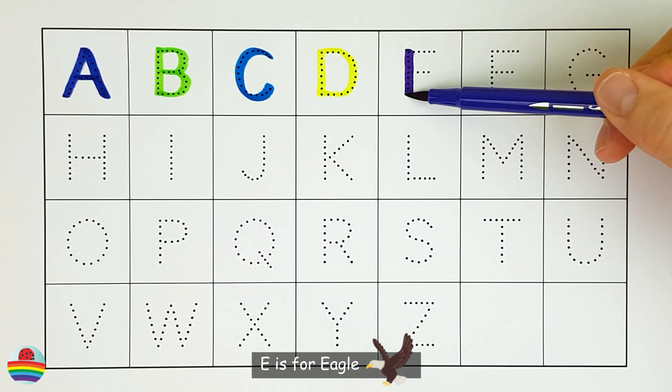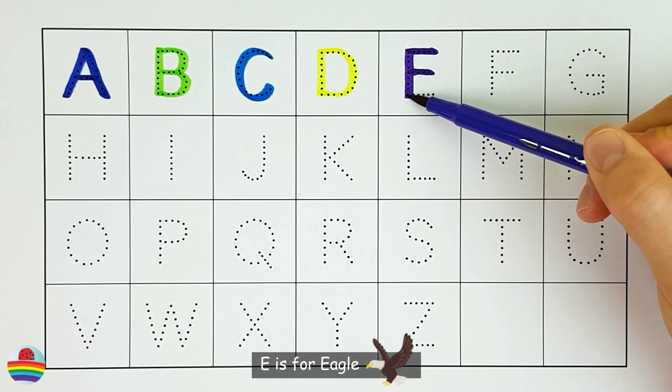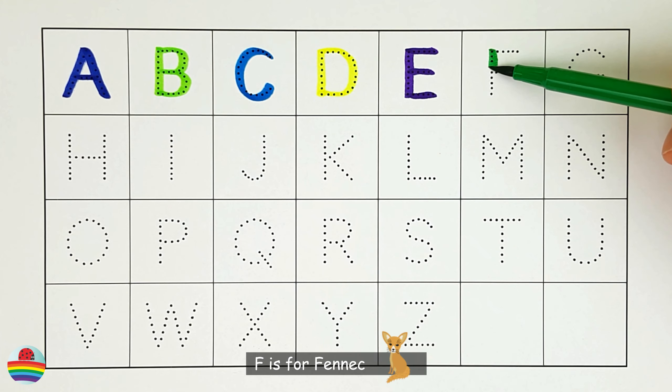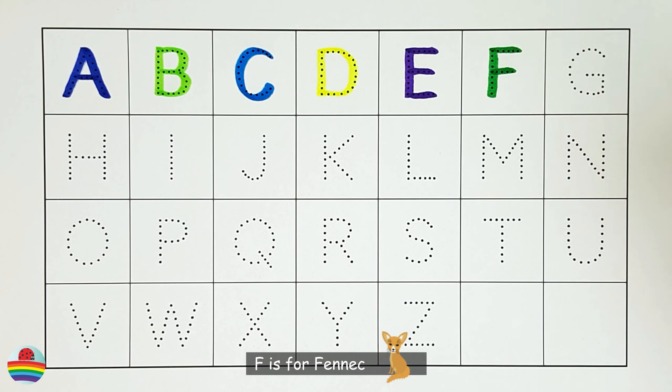E. E is for eagle. E. F. F is for fennec. F.